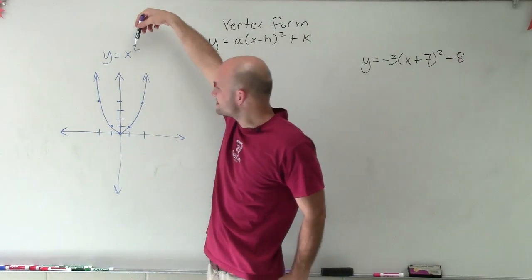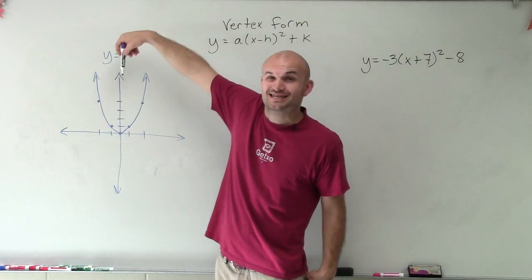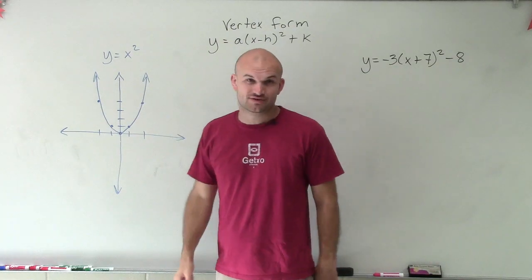When looking at our parabola, we know that the axis of symmetry is going to be our vertical line when x equals 0, and our vertex is at 0, 0.